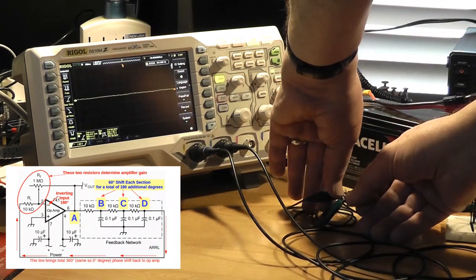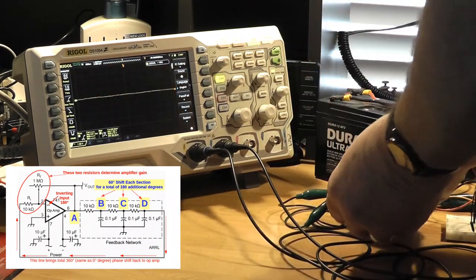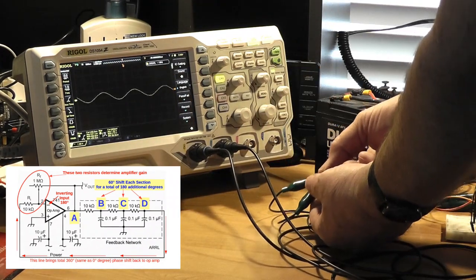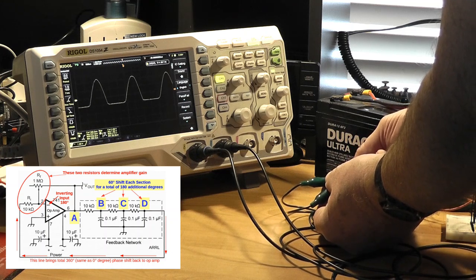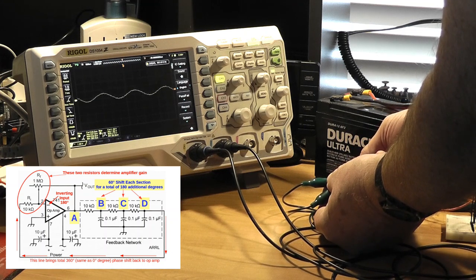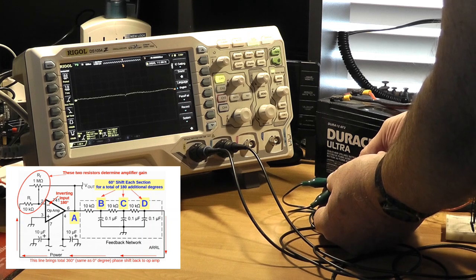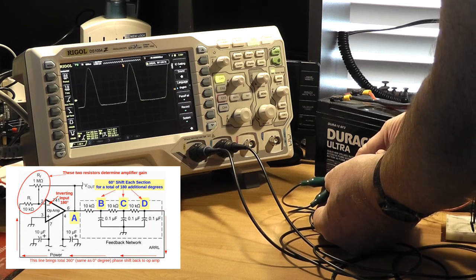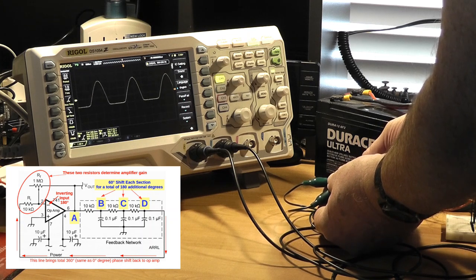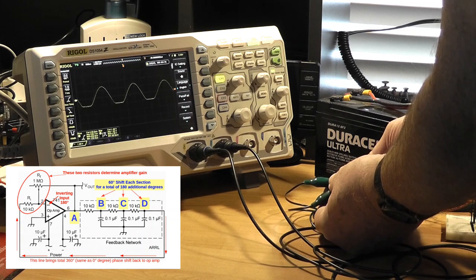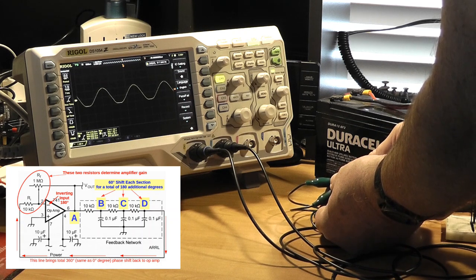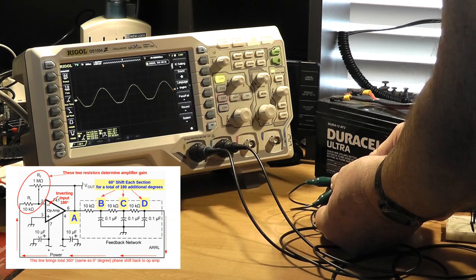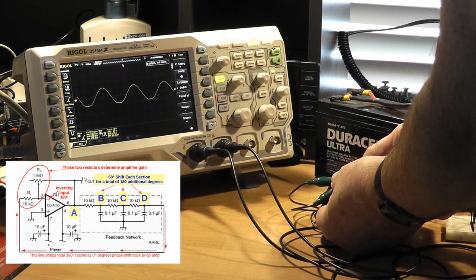Now, if you adjust the potentiometer so the gain is too low to sustain oscillation, nothing happens. If there's too much gain, the op-amp goes crazy trying to follow the feedback. But if it's just right, you get a nice sine wave output, shown as the yellow trace on the oscilloscope. The output of the amplifier is what you're seeing on the scope, and it's also what's fed into the phase shift network.